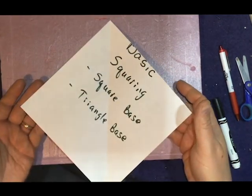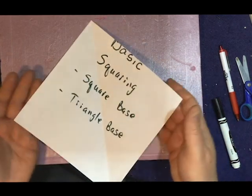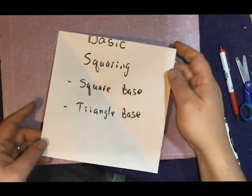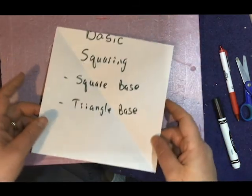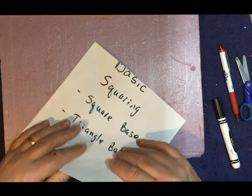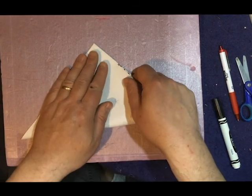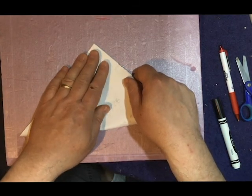Now, to start with, we're going to do what's called the square base, and then we'll show you a quick way to transition to triangle base. Both of these bases are building blocks in origami. You'll see that crease is on the inside. I'm going to fold this over and make the next crease over here like this.